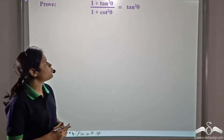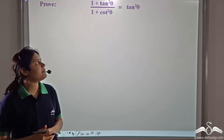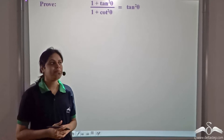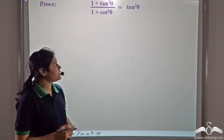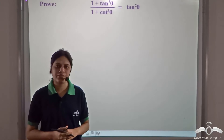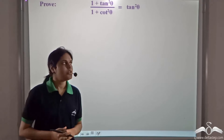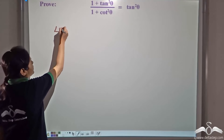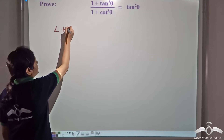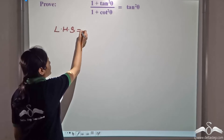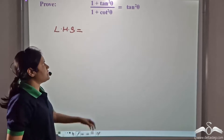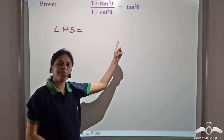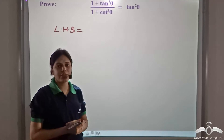We need to prove that (1 + tan²θ) / (1 + cot²θ) = tan²θ. So let's do that. In the left hand side we have 1 + tan²θ divided by 1 + cot²θ.